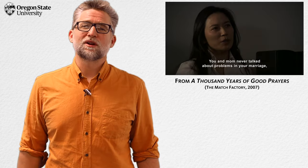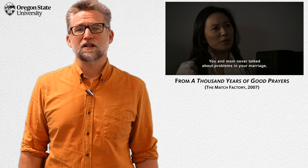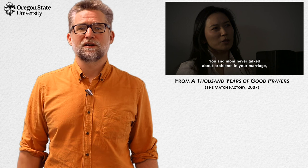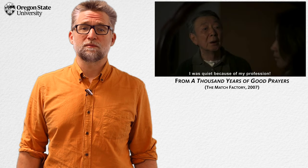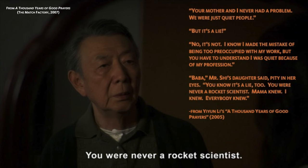One page later, when his daughter tells Mr. Xu that he and her mother never talked about the problems of their marriage, Mr. Xu tells her that his job as a rocket scientist forced him to withdraw from the family. It is here that the actual climax occurs. 'Your mother and I never had a problem. We were just quiet people.' 'But it's a lie.' 'No, it's not. I know I made a mistake of being too preoccupied with my work, but you have to understand I was quiet because of my profession.' 'Baba,' Mr. Xu's daughter said, pity in her eyes. 'You know it's a lie, too. You were never a rocket scientist. Mama knew. I knew. Everybody knew.'